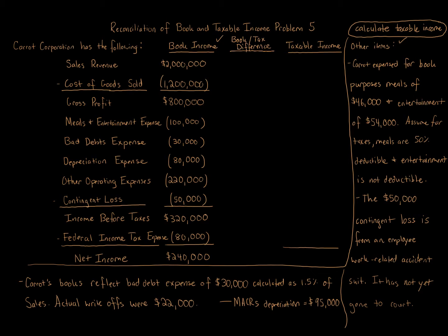On your tax return — whether it's a 1120, 1065, or 1120S — regardless of the type of entity such as C-corporations, S-corporations, or partnerships, there are schedules where you must show your reconciliation of book to taxable income. It's required by law. The idea is that you're showing these adjustments to demonstrate how you get from book income to taxable income. There are differences in the rules — things like meals and entertainment, depreciation, or municipal bond interest have different rules in the tax law than under GAAP, generally accepted accounting principles.